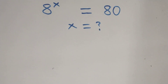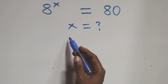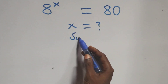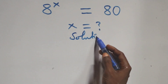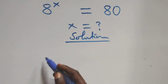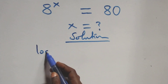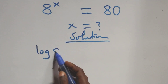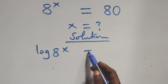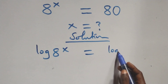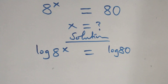Hello, you're welcome. Here we solve this exponential equation. We take the log on both sides: log of 8 raised to power x equals log of 80.